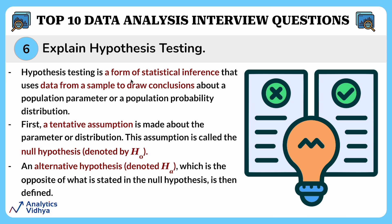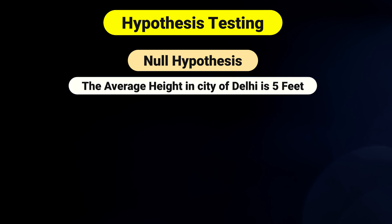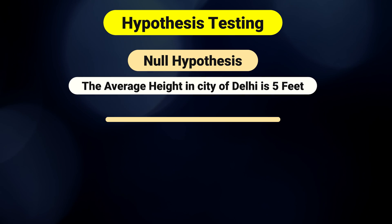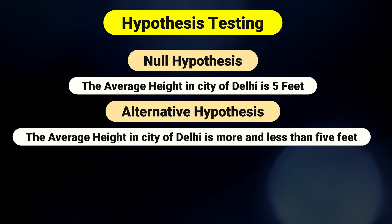This question is about hypothesis testing. Hypothesis testing is a form of statistical inference that uses data from a sample to draw conclusions about a population parameter or a population probability distribution. To perform hypothesis testing, a tentative assumption is made about the parameter — this is called the null hypothesis, denoted by H0 — and then there is an alternate hypothesis, called HA. For example, let's say your assumption is that the average height in the city of Delhi is 5 feet — this becomes your null hypothesis. Your alternate hypothesis would be that the average height is more or less than 5 feet.